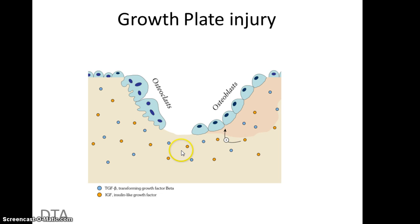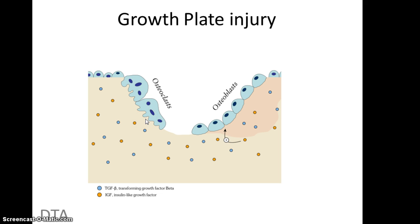Bone growth occurs via osteoclasts and osteoblasts. Osteoblasts lay down new fibers for the bones to grow, while osteoclasts remove dead fibers. The removal of old material by osteoclasts allows new fibers to be laid down — like clearing old debris and replacing it with new foundations — enabling the bone to grow and become much stronger.